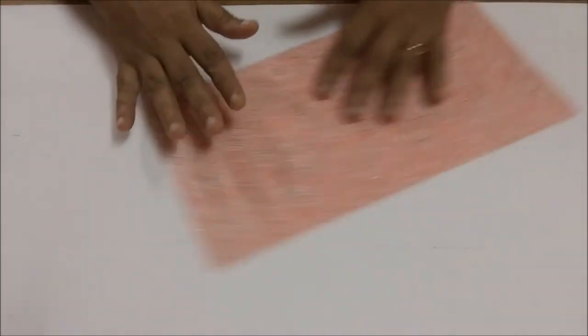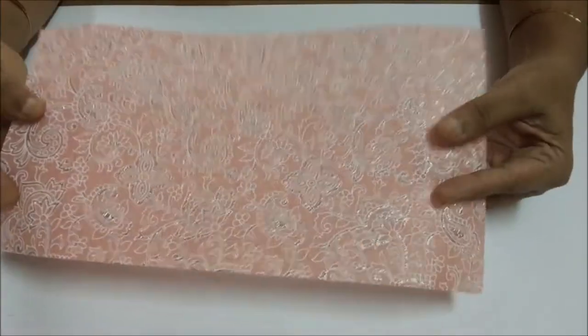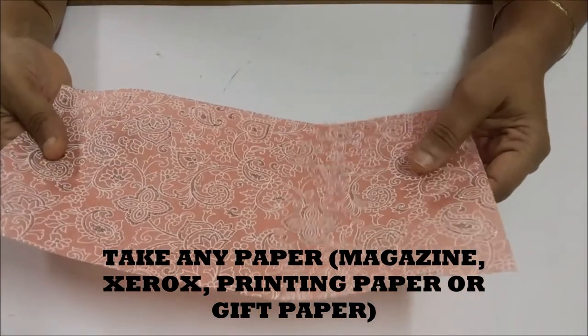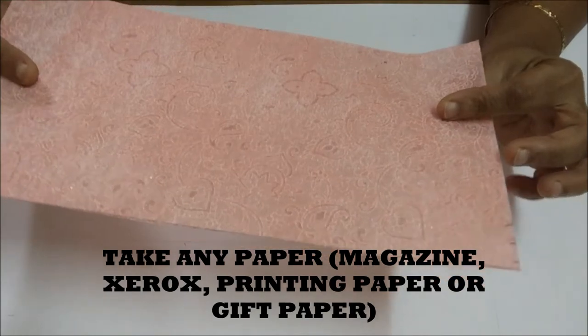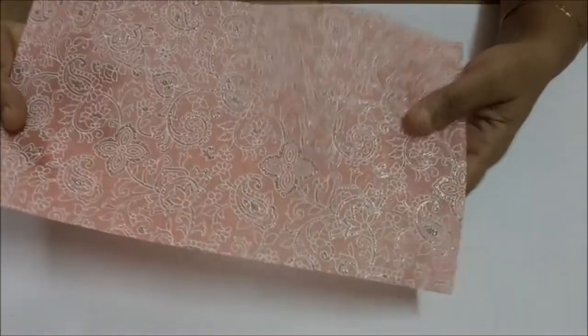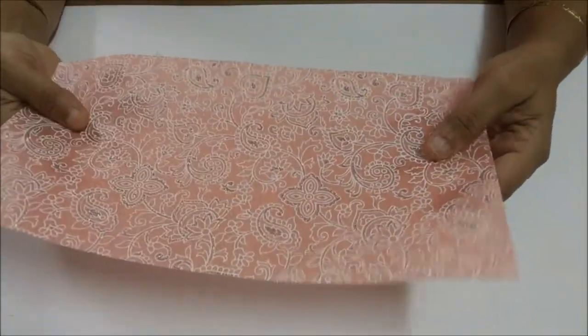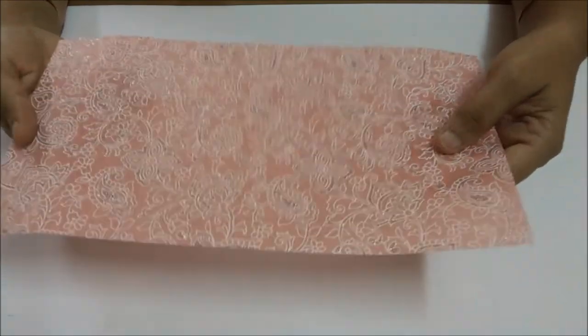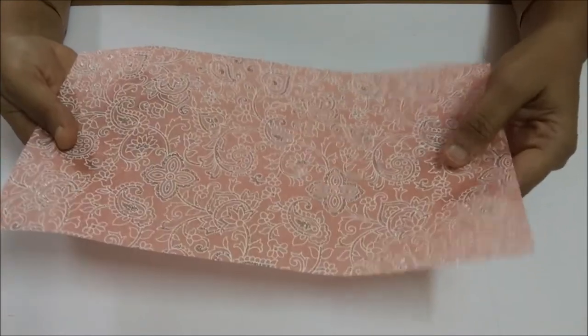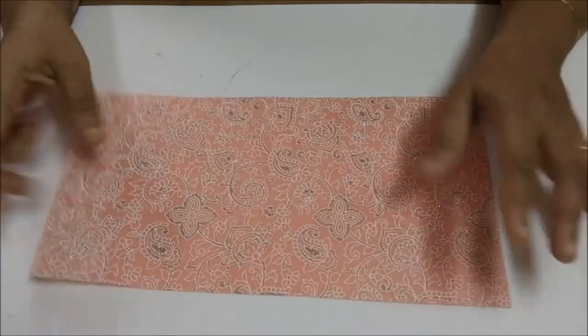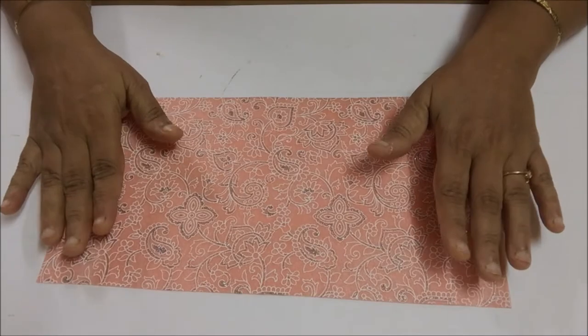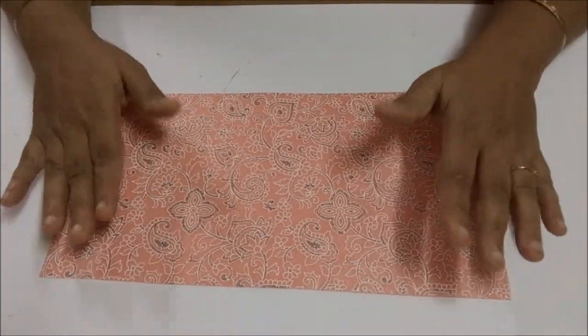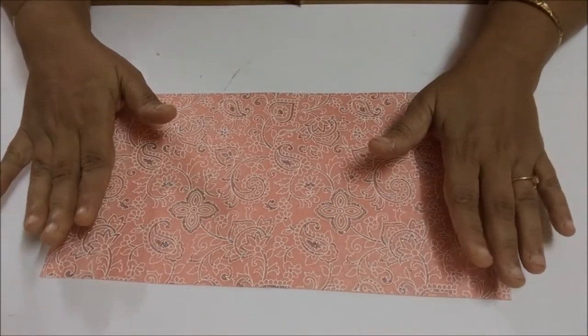Today we will be making conical beads. I am using this paper. This is not exactly paper, it's a paper-cloth hybrid. I got this from a stationery shop but it is beautiful paper. You can take any paper - magazine paper or normal xeroxing paper. I have used a colored paper for making the conical bead.